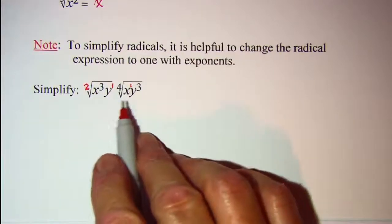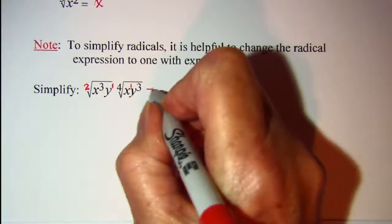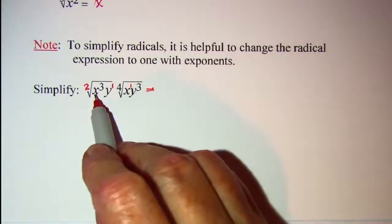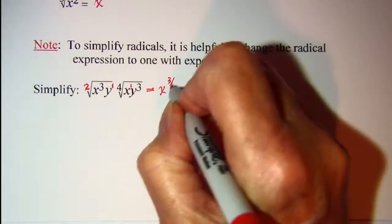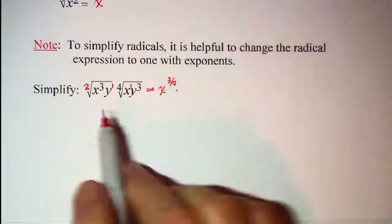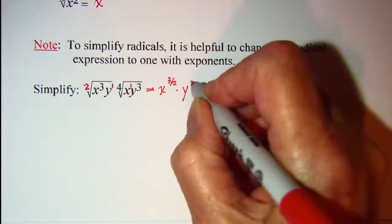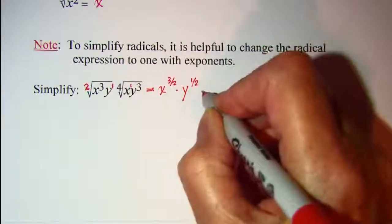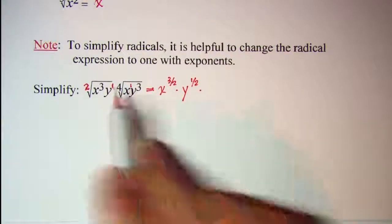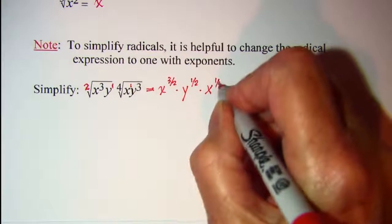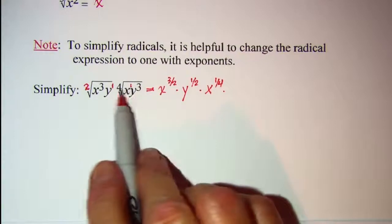Alright now I'm just going to write this as the product of factors with exponents. So this x is to the 3 over 2 multiplied by this y is to the 1 over 2 multiplied by this x is to the 1 over 4 multiplied by, and then this y is to the 3 over 4.